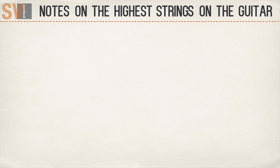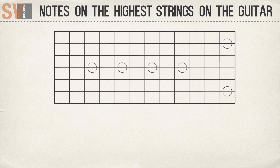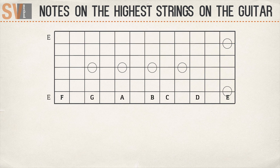Now that you can find the notes on the first four strings of the guitar, you can easily find the notes on the two higher strings. We start with the higher string, the E string. The lower string is also the E string, which means that these two strings have the notes on the same spots.